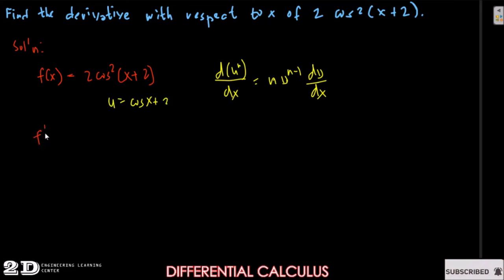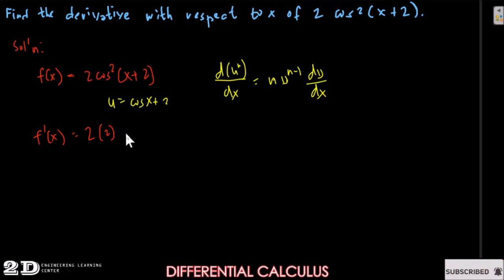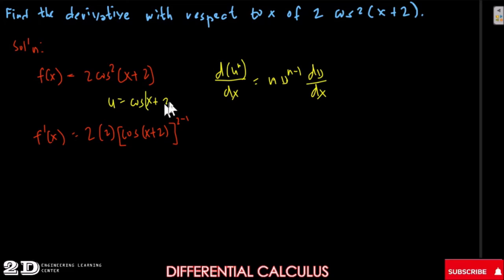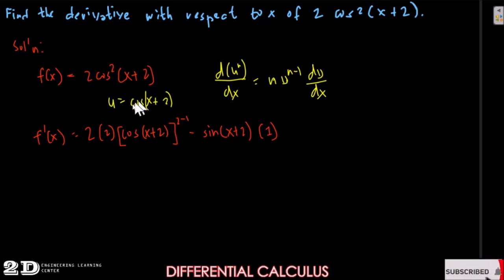So our first derivative f prime of x is equal to 2 times n — the n is 2 — times cosine x plus 2 raised to the power of 2 minus 1, then times the derivative of u. The derivative of cosine x plus 2 is negative sine, and the derivative of x is 1, so times 1.